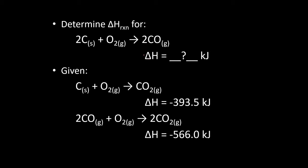In this particular example, we are trying to find the enthalpy change for the reaction 2C + O₂ → 2CO. We want to know the enthalpy change for this reaction, but we don't know it. We do know the enthalpy change for two other reactions, so we're going to manipulate those two reactions to produce this one. If we can accomplish that, then doing the same thing with the enthalpies will give us the correct enthalpy for this unknown reaction.